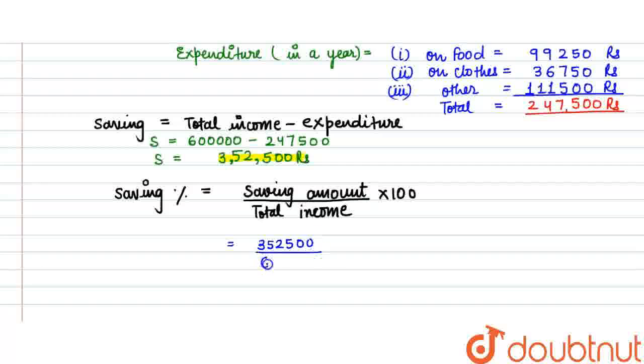Substituting the values, saving amount is Rs. 3,52,500 divided by 6,00,000 multiplied by 100. First we cancel out the zeros. Now we have 3,525 divided by 60. Dividing this by 60, we get...